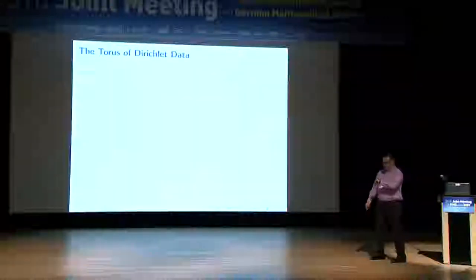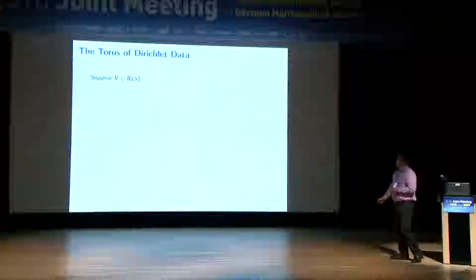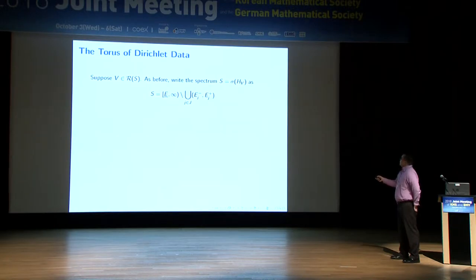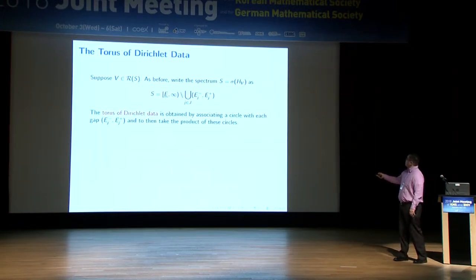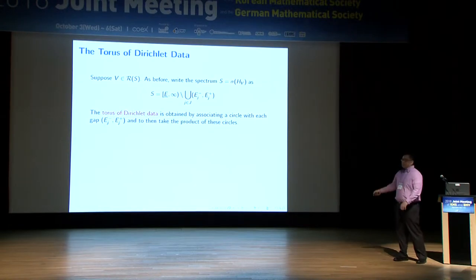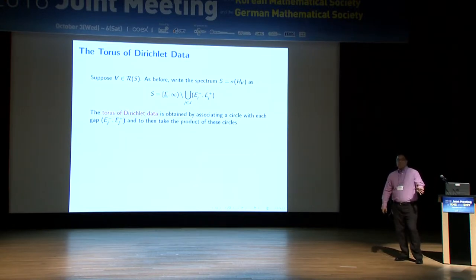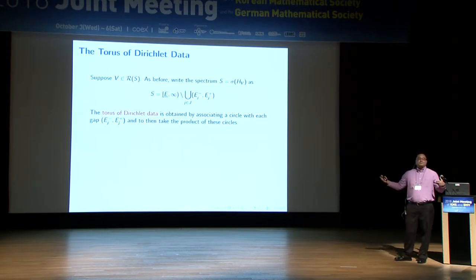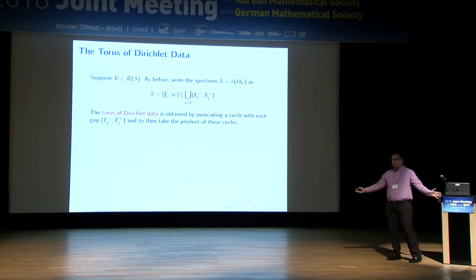Let me explain what this torus is — it's called the torus of Dirichlet data. You start with your set S, view it as a half-line minus its complement, and you have a collection of gaps indexed by a set J that's either finite or countable. For each of these gaps, you basically draw a circle. Then you take the product of these circles. That certainly is a torus, and it's called the torus of Dirichlet data D(S).